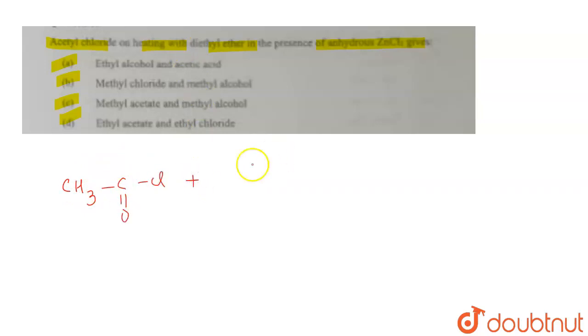When this is treated with diethyl ether, which is C2H5-O-C2H5, in the presence of anhydrous ZnCl2, it leads to the formation of... Now when this reaction takes place between CH3COCl, which is acetyl chloride, and the ether, what are the products formed?